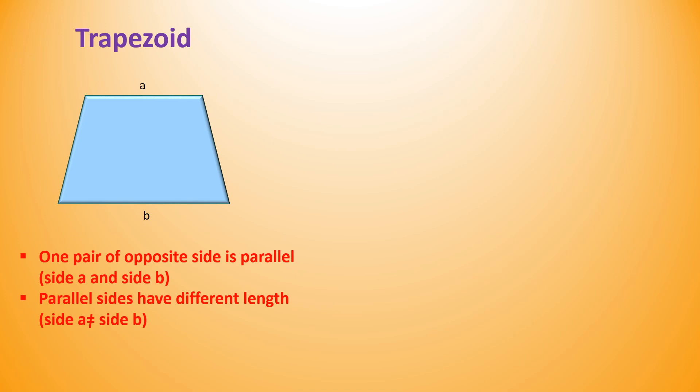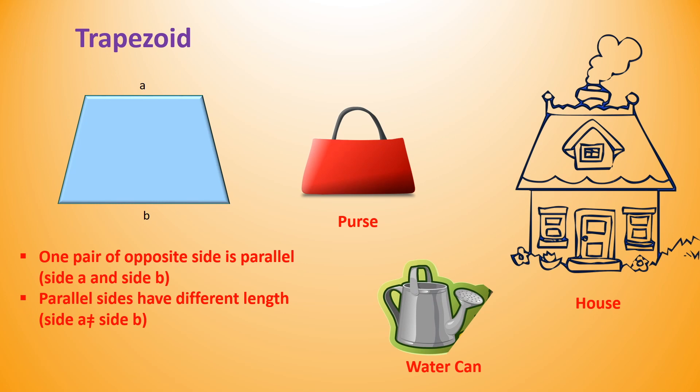Trapezoid is another 2D shape which is less common. Trapezoid has one pair of opposite sides which is parallel. Also, these parallel sides have different length. We can relate shape of house or roof of house or water can shape to the trapezoid.